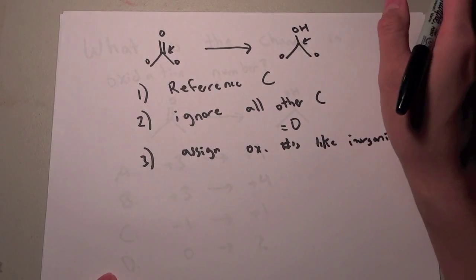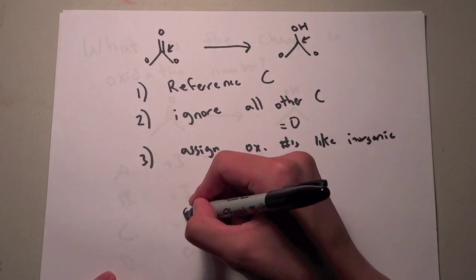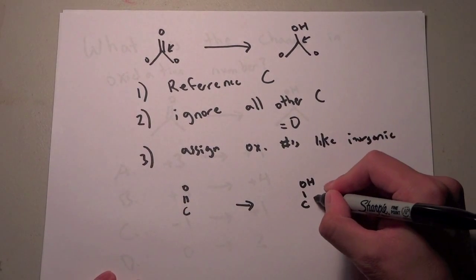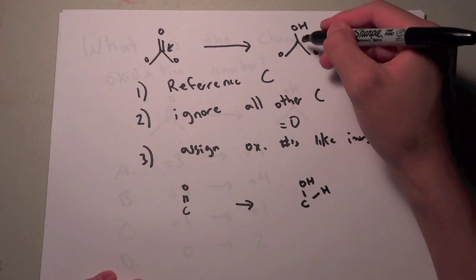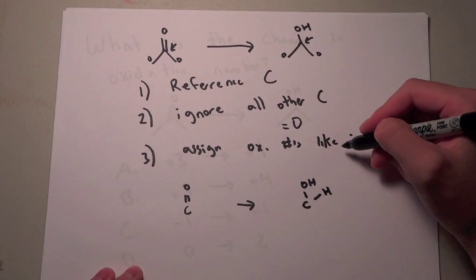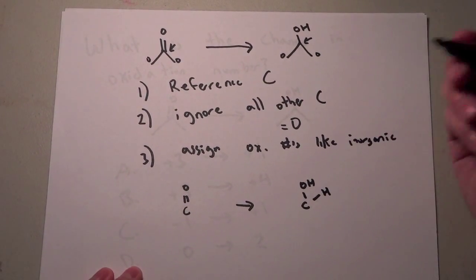Just ignore them, don't even worry about them. So we can pretty much just say this, C double bond O goes to COH. And remember that the H isn't shown but it is there. So now we go to the third step and assign the oxidation numbers just like we would before.